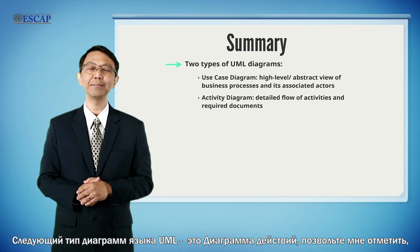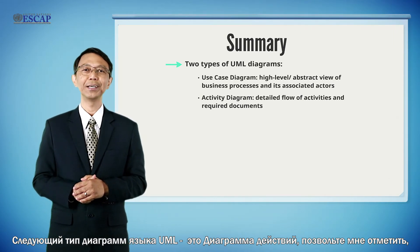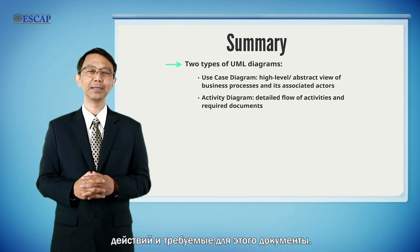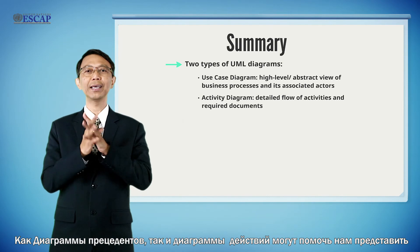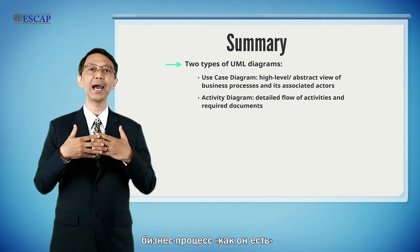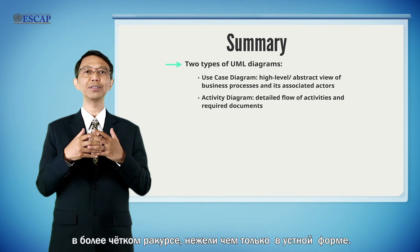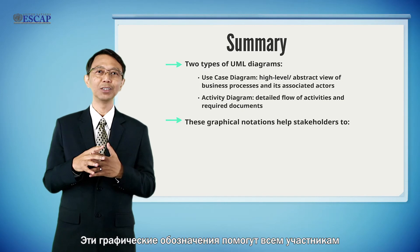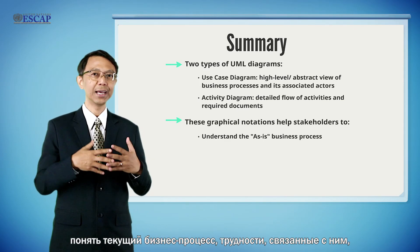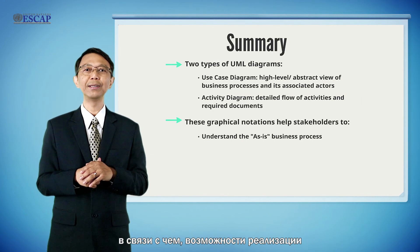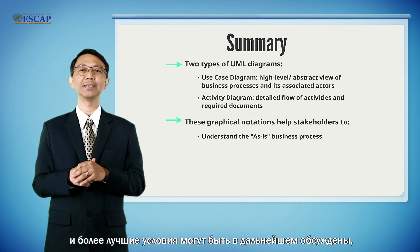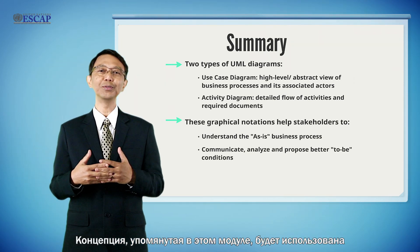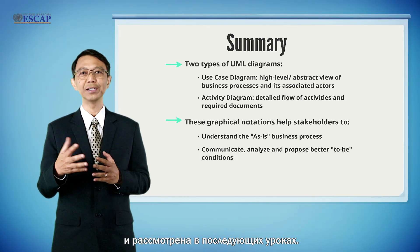The second type is the activity diagram, used to capture the detailed flows of activities and required documents. Both use case diagrams and activity diagrams can help us capture the existing or as-is business processes more precisely than verbal communication alone, helping all stakeholders understand current business processes and their complications. Therefore, implementation opportunities and better-to-be conditions can be further communicated, analyzed, and proposed. The concepts mentioned in this module will be further utilized in the following learning modules.